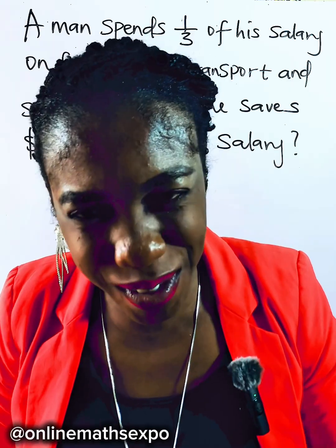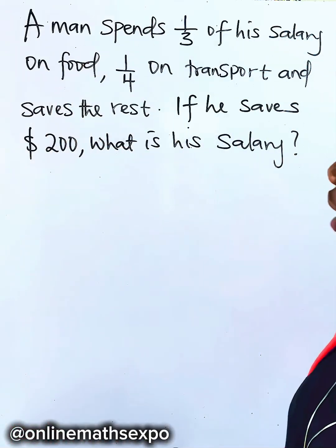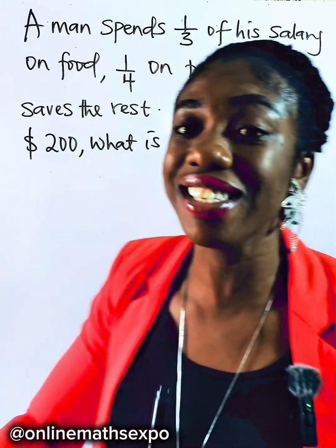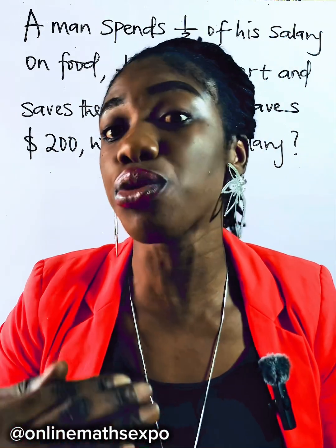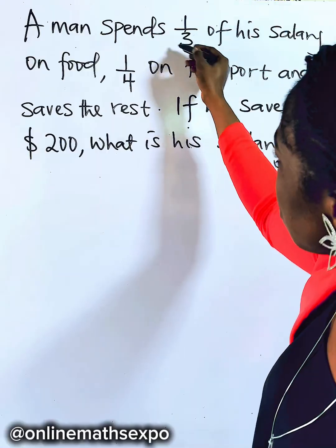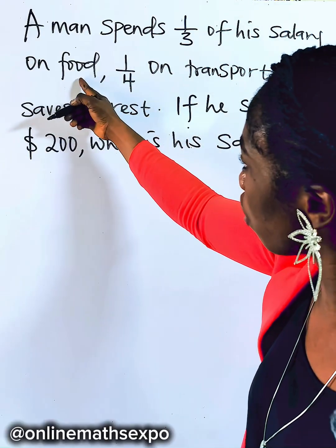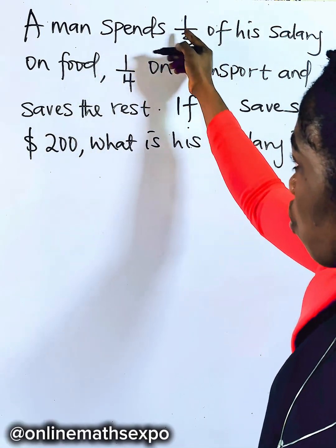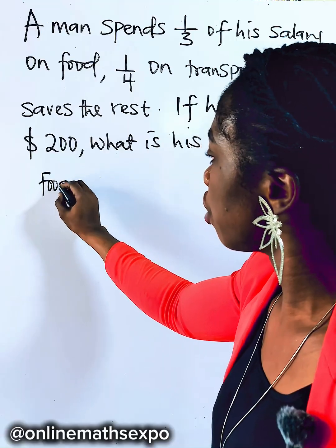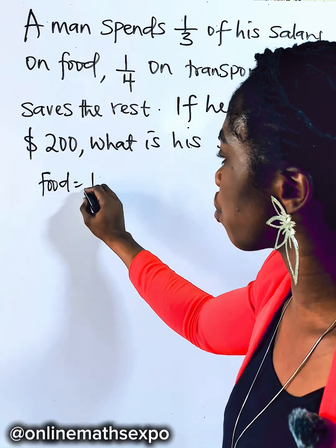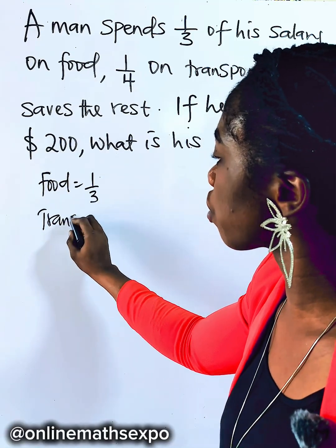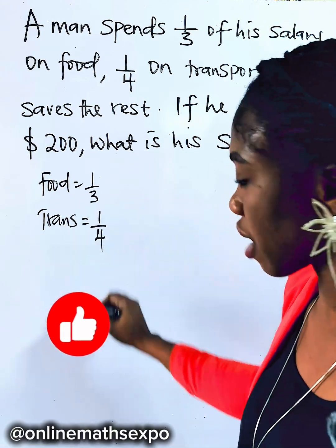It's just so easy, so relax. Now, this man shared his salary into fractions. The fraction he spent on food is one third, and for transport he spent one quarter.